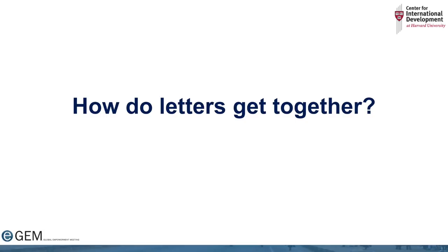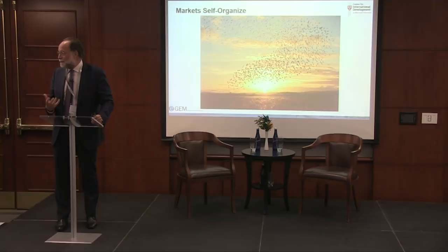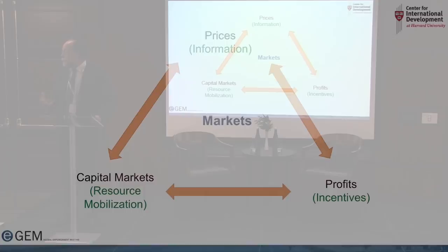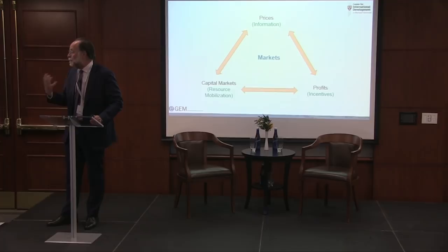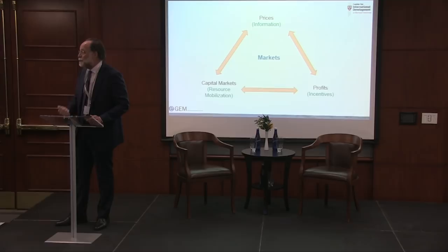How do letters get together? There's something called the invisible hand. Adam Smith was probably the first complex systems thinker — he thought the economy has a capacity to self-organize. It has three things: prices as a source of information, as Hayek taught us; profit-motivated firms that respond to those prices; and capital markets that mobilize resources to those expected to be profitable. That's the invisible hand that self-organizes the economy.